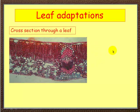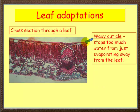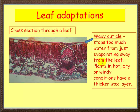If we look now at a leaf in cross section — imagine you've cut through a leaf — this is the upper surface, this is the lower surface. On the top of the leaf you've got a waxy cuticle. This stops too much water from evaporating away from the leaf. With the sun shining on the upper surface all day, there's a tendency for water to be lost by evaporation, and this waxy cuticle protects the leaf from water loss. Plants in hot, dry or windy conditions are prone to more water loss and therefore have a thicker wax layer.